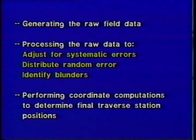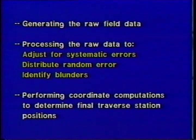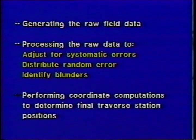We have reviewed topics relative to generating the raw field data. The remaining portion of the video will focus on the areas of computations and traverse adjustments. There are three primary areas of activity related to performing traverse computations: generating the raw field data, processing the raw data to adjust for systematic errors such as incorrect tape corrections and incorrect temperature corrections when taping, and distributing random error and identifying blunders.